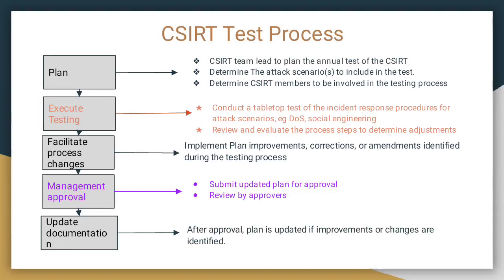After planning, you execute testing by conducting a tabletop test of the incident response procedures for attack scenarios like DoS attacks or social engineering. Then you review and evaluate the process steps to determine adjustments. After that, you implement plan improvements and amendments identified during testing. You then submit to managers for approval, and once approved, the plan is updated and documentation is completed.